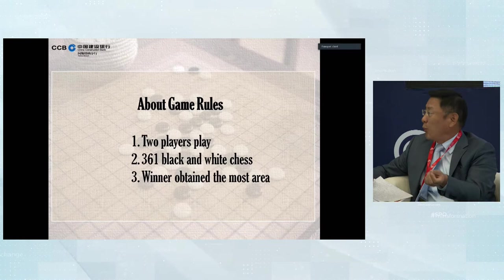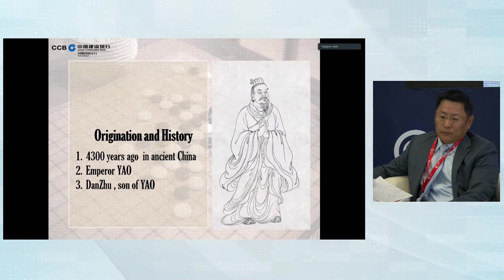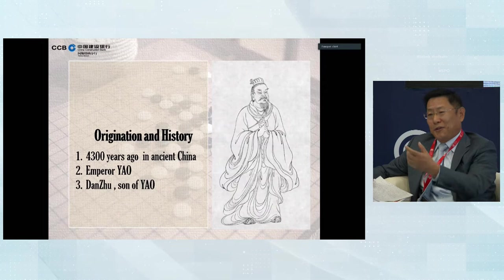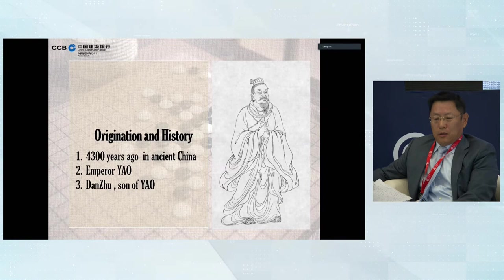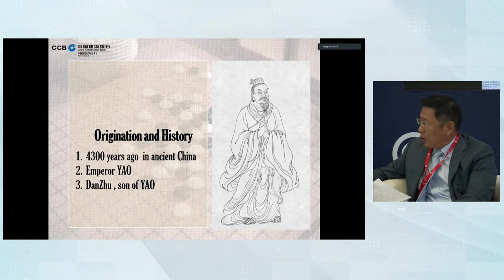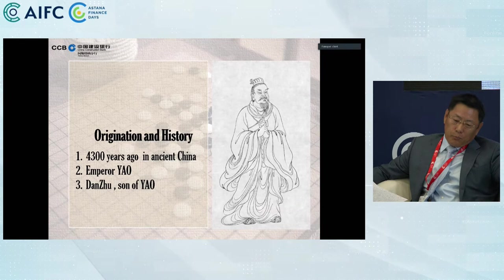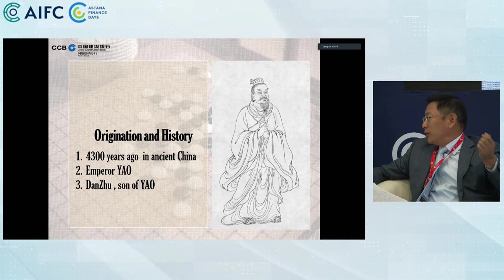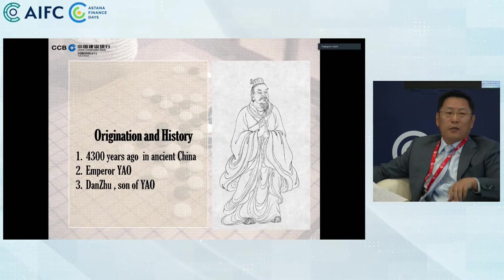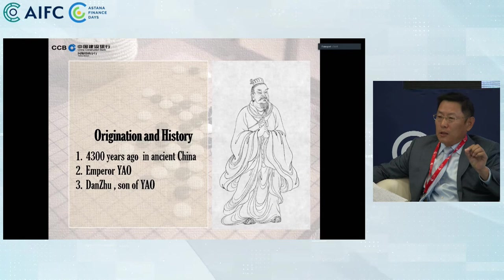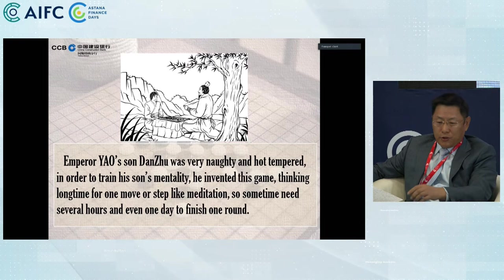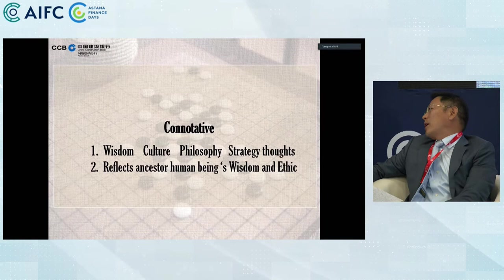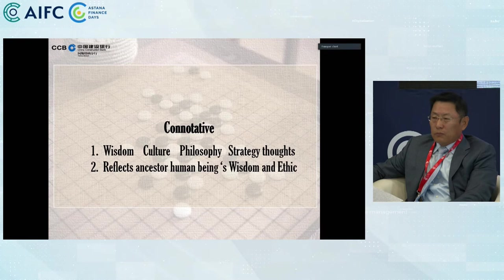I want to introduce the original history because this is a Chinese game, originating 4,300 years ago. It was invented by the remote Chinese emperor Yao. Why did he invent this game? Because his son, Dan Zhu, was very hot-tempered, rebellious, and naughty. He wanted his son to be able to sit still and think more — like meditation. The game reflects much more strategic thought and also reflects ancestral human beings' wisdom and ethics.